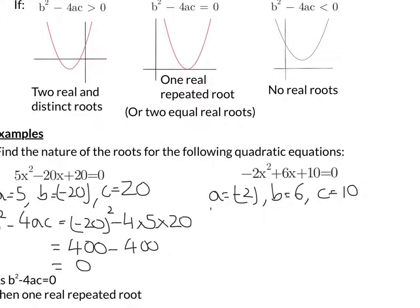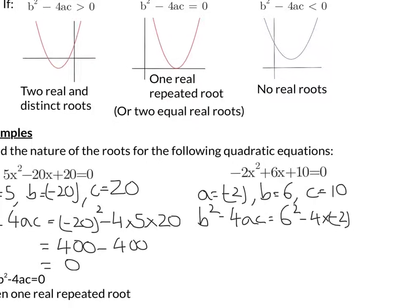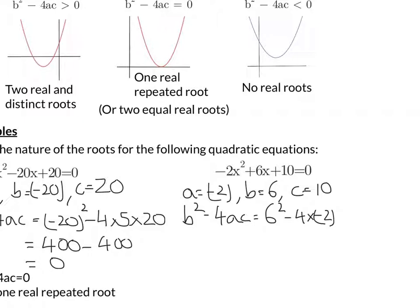So putting that into our discriminant, b squared minus 4ac, we're going to have 6 squared (because that's b) minus 4 times a, well that's negative 2, and then c, which is 10. So let's do that. 6 squared is 36. Negative 4 times negative 2 is positive 8, times by 10 would be 80.